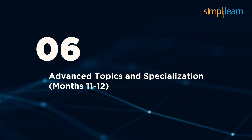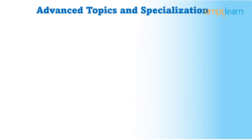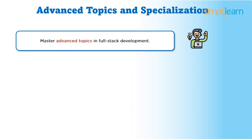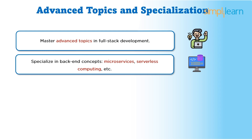Number six: advanced topics and specialization, months eleven and twelve. The final phase of your journey, spanning months eleven and twelve, is dedicated to mastering advanced topics and specializing in specific areas of interest within full-stack development. You'll have the opportunity to delve deeper into advanced back-end concepts such as microservices architecture, serverless computing, containerization using Docker, and cloud platforms like AWS, Azure, and Google Cloud Platform. Specializing in these areas will equip you with the skills and knowledge needed to design scalable, resilient, and efficient back-end systems.